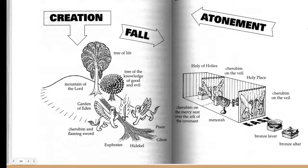I should note that P, the priestly source and author of this text, is generally considered a late author, probably writing after the Babylonian exile. But the ritual described is almost certainly much older. P is describing an existing, early ritual that he and his fellow priests performed. The ritual is probably ancient; the source telling us about it is probably late.